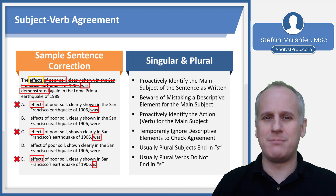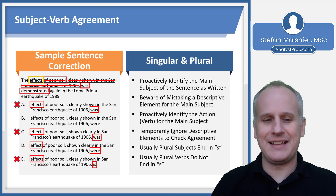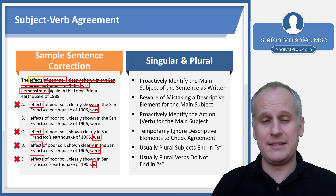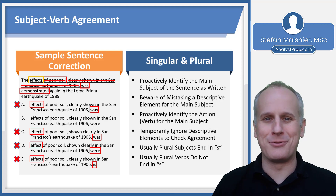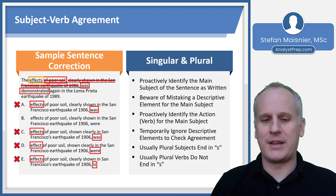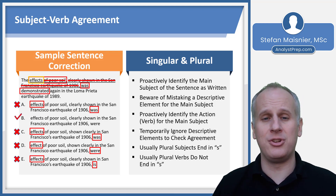We can eliminate those three answer choices immediately — you can see how this helps with efficiency in evaluating EA sentence correction. Looking at the remaining choices B and D, choice D subtly changes 'effects' to 'effect.' If you're not careful you might pick D because you wanted 'were,' but you need 'effects were,' so D is out. Reading choice B back into the original sentence: 'The effects of poor soil clearly shown in the San Francisco earthquake of 1906 were demonstrated again in the Loma Prieta earthquake of 1989.' That captures the original intent and fixes the number issue. Select B and move on.